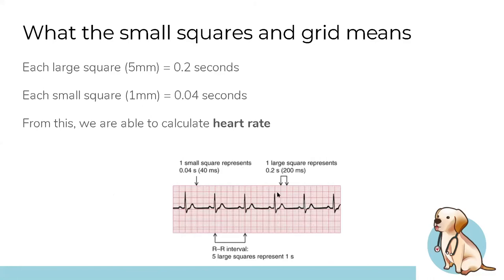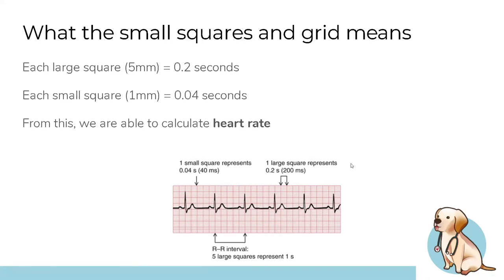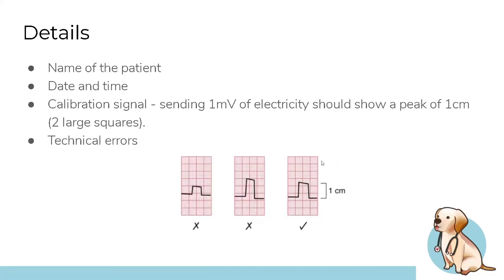On the ECG grid: large squares are five millimeters and represent 0.2 seconds; small squares are one millimeter and represent 0.04 seconds — five large squares equals one second. The calibration signal at the start of an ECG should show a peak of one centimeter (two large squares). Check for technical errors: the baseline should be fairly straight; a wandering baseline indicates something has gone wrong. A shivering patient may produce a chaotic ECG that looks similar to V-fib. Always check that aVR is negative — if positive, the leads are likely placed incorrectly.